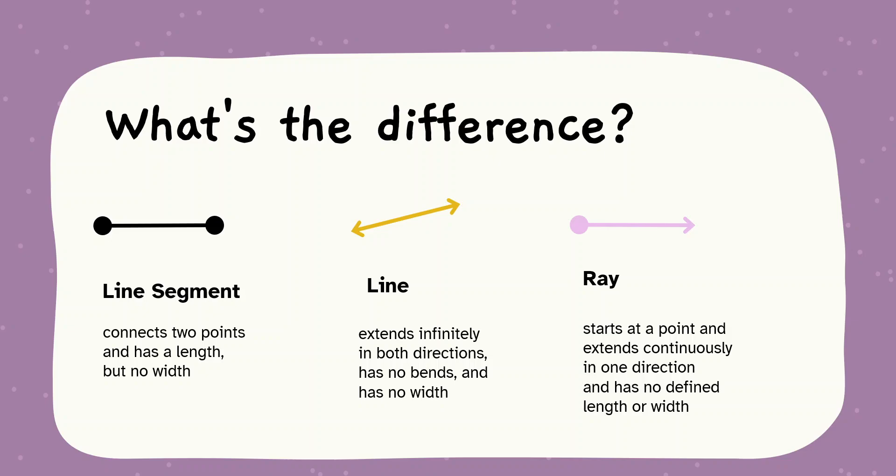What's the difference? A line segment. Line segment connects two points and has a length but no width. For example, this is a line segment. We are connecting just two points. If you consider this is point A, this is B, then we are connecting. This is a fixed length.